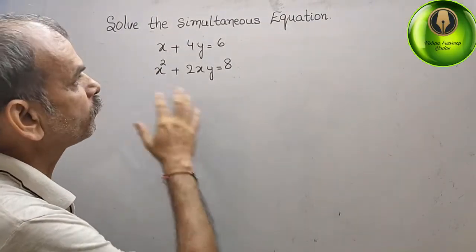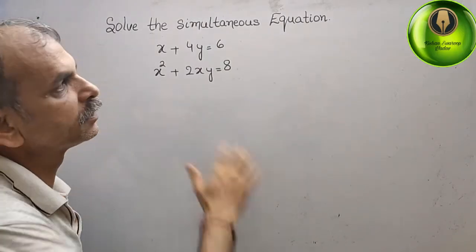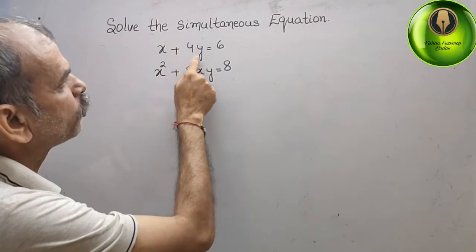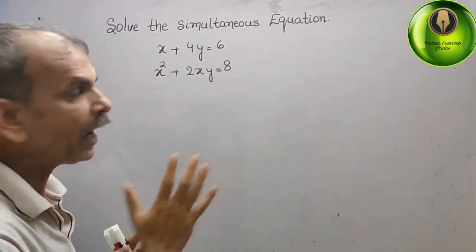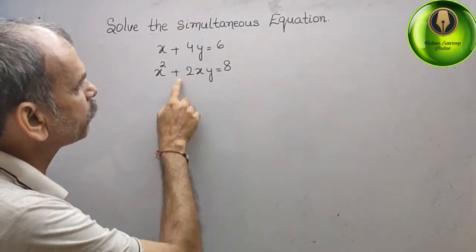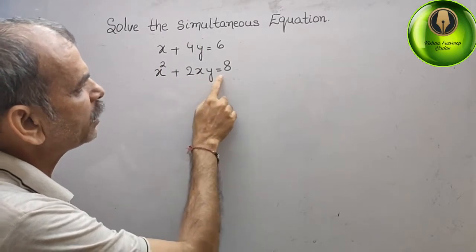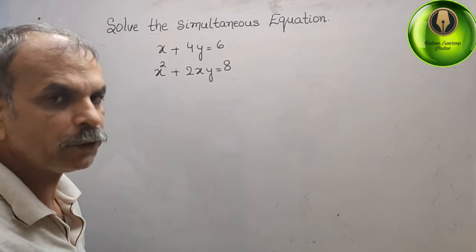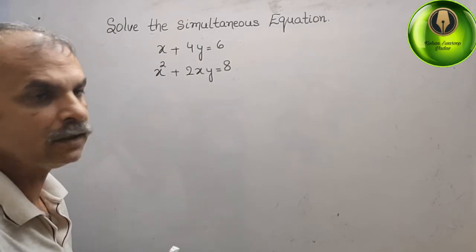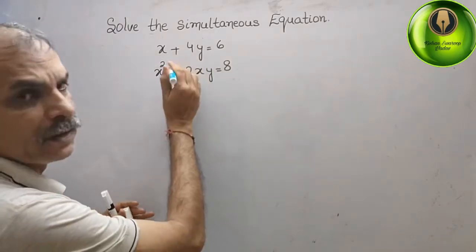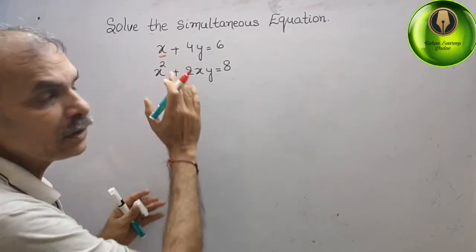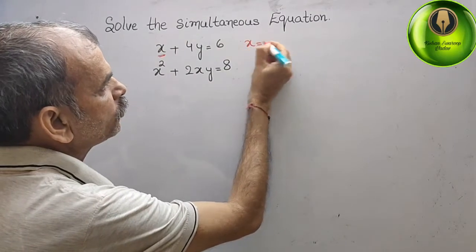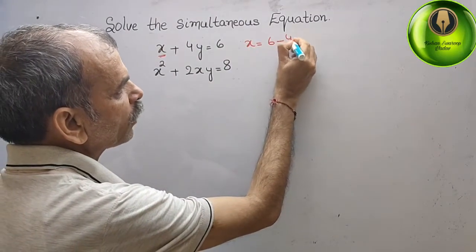The question is to solve the simultaneous equations: x + 4y = 6, and x² + 2xy = 8. From the first equation, we find the value of x: x = 6 - 4y.